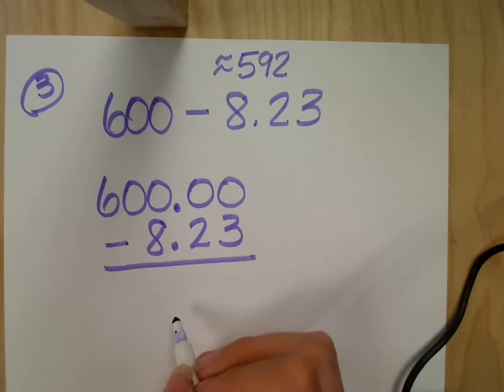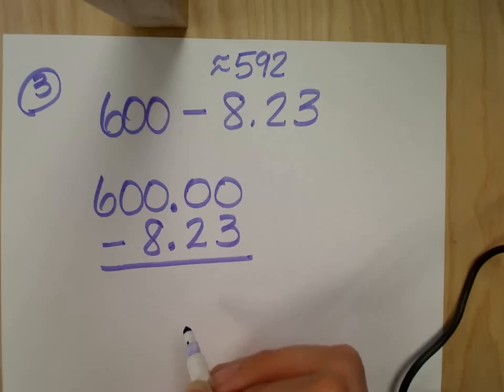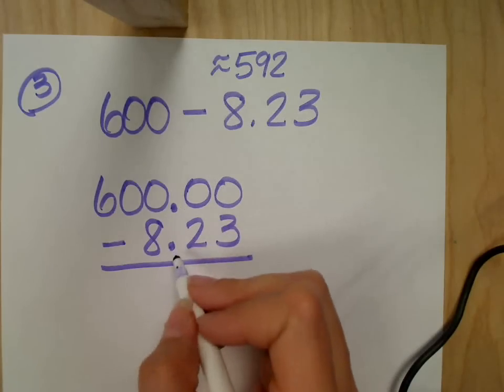Do you always have to line up your decimals when you subtract? Yes. What about when you add? Yes, same thing. Adding and subtracting of decimals, you've got to line them up.